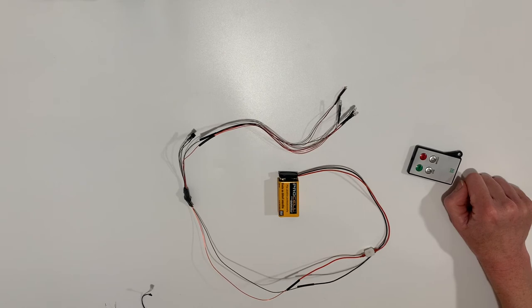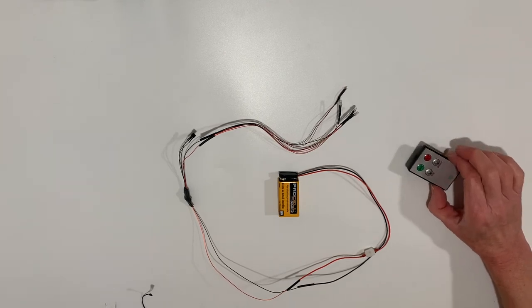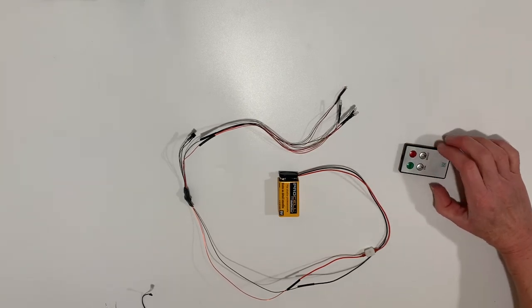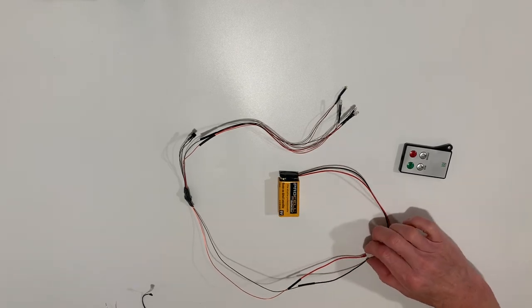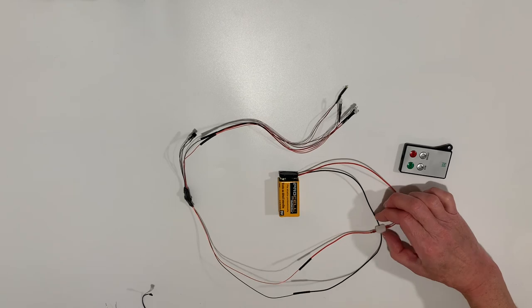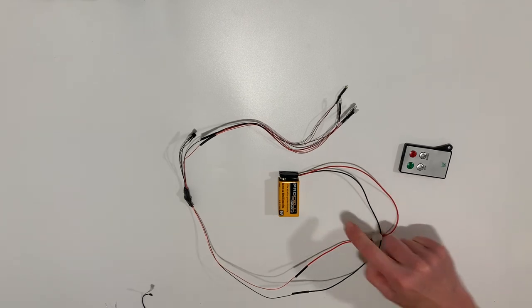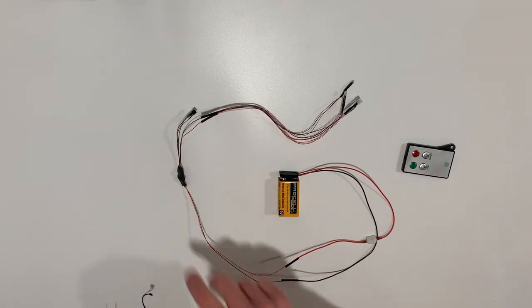One thing about the remote - it will continue to stay awake waiting for the next signal. If you want to make sure not to drain your battery, you'll want to use the switch to turn it off as well. That way there's no battery drain while the remote waits for a signal.